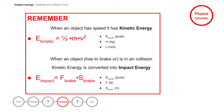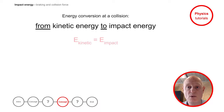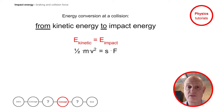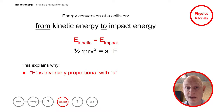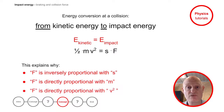When an object has speed, it has kinetic energy. When an object has to brake or is in a collision, kinetic energy is converted into impact energy. When this kinetic energy is converted into impact energy, the two equations can be combined. You get: half times mass times velocity squared equals the distance times force. This equation shows that the force during braking or during a collision is inversely proportional to the braking distance, directly proportional to the mass, and directly proportional to the velocity squared.